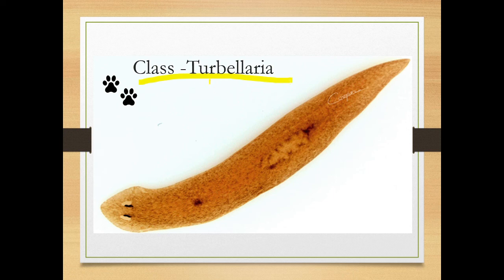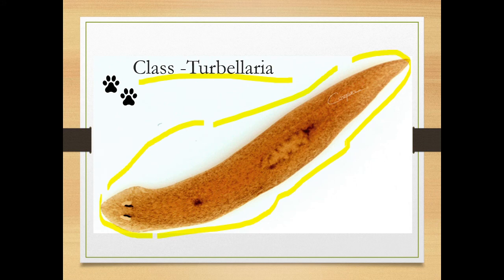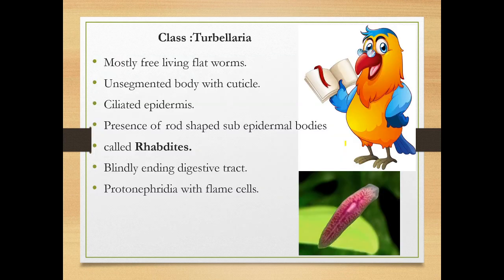Class Turbellaria. This organism belongs to Turbellaria, found in water, hence the name. The main features: they are mostly free-living flatworms, not parasites. At least one or two species may be parasitic, but others are mostly free-living.